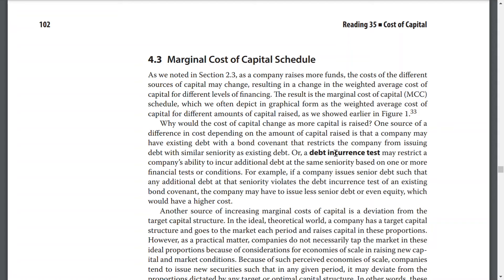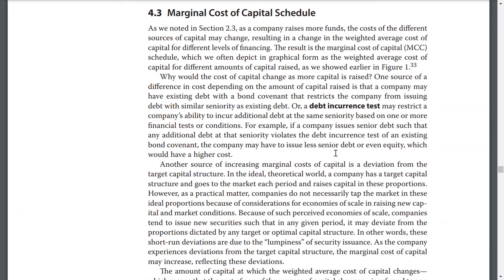As shown earlier in Figure 1, why would the cost of capital change as more capital is raised? One source of difference in cost depending on the amount raised is that the company may have existing debt with a bond covenant that restricts the company from issuing debt with similar seniority as existing debt. Debt incurrence tests may restrict a company's ability to incur additional debt at the same seniority based on one or more financial tests or conditions.